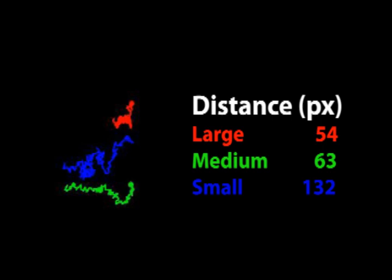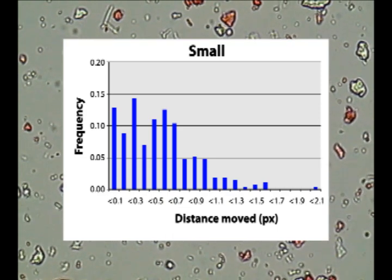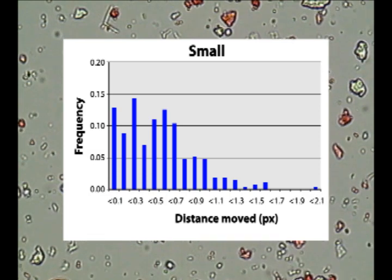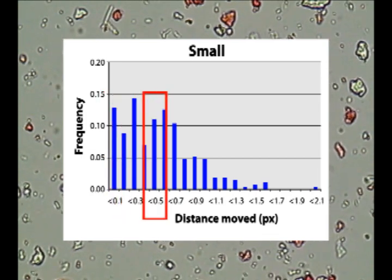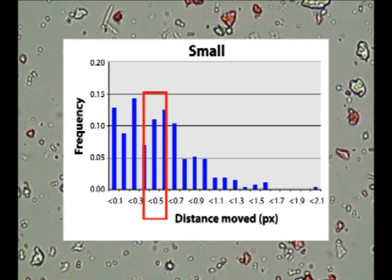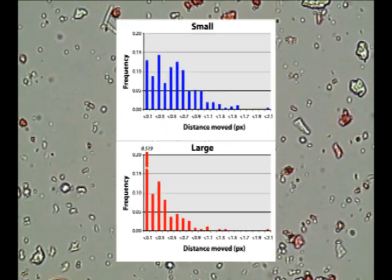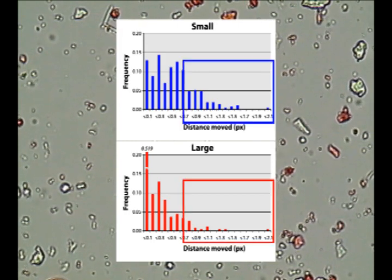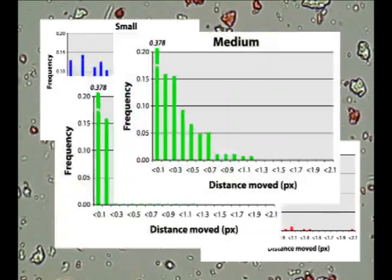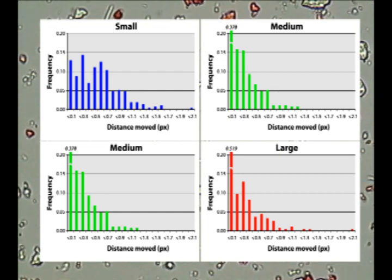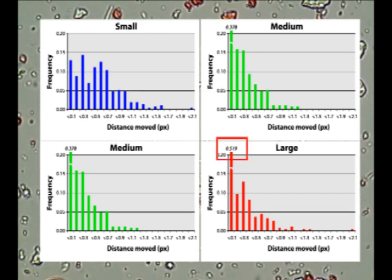This size bias has a statistical explanation. We can quantify the distance moved between each frame of the video, at intervals of about 1/30th of a second. Each bar represents the likelihood of a movement of that particular distance. Comparing the small particle with the large particle, we can see why the small particle's random walk takes it further — it is more likely to make long jumps and less likely to make short jumps than the large particle. The medium-sized particle is also more likely to make longer jumps than the large particle. Indeed, the large particle shows no discernible movement in more than 50% of the frames.